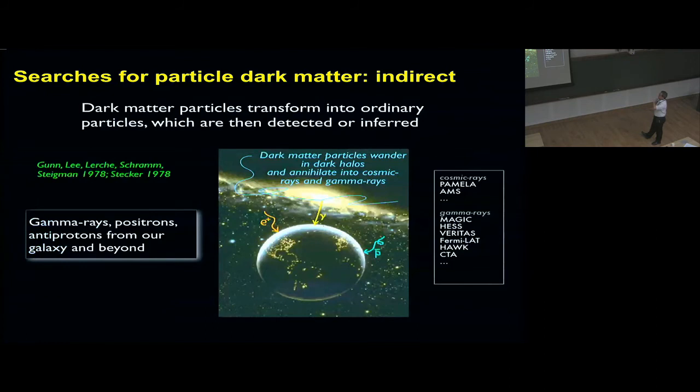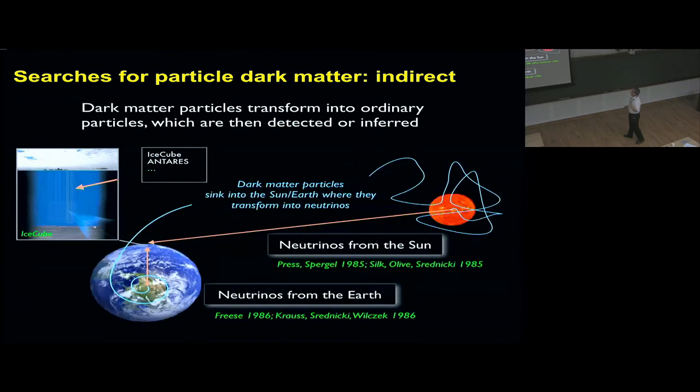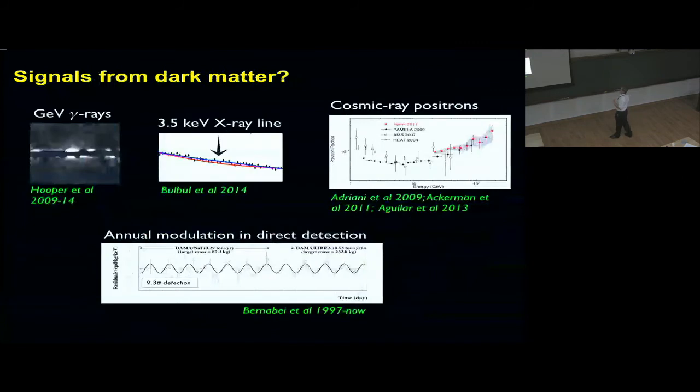In indirect searches, we search for rare astrophysical particles like specific gamma rays or positrons or antiprotons, either from our galaxy, other galaxies, the sun or the earth. There are many of these experiments. Here's a slide that changes every year I give talks, and it shows some of the signals from dark matter—question mark—like GeV gamma rays, 3.5 keV X-ray line that I mentioned earlier, the cosmic positrons, and the annual modulation in direct detection by the DAMA experiment. I'm going to go through just two of these, the gamma ray excess.